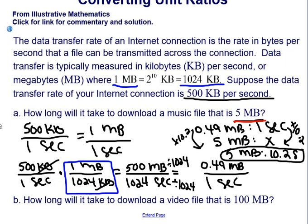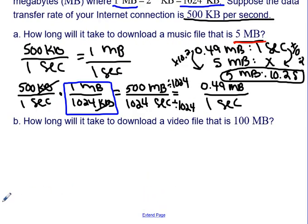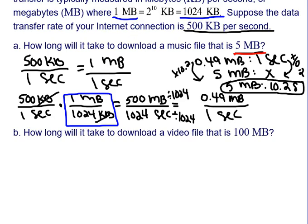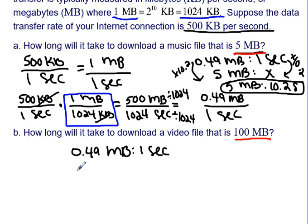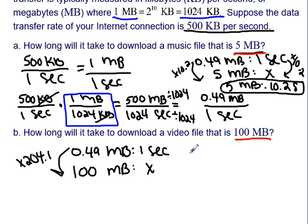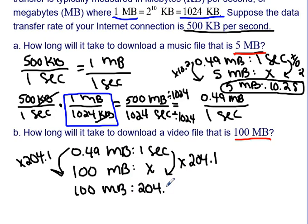Part B asks how long it will take to download a video file that is 100 megabytes, with the same internet connection from Part A. Our conversion factor told us the download speed was 0.49 megabytes per one second. For 100 megabytes, we need to find the unknown time. Since 100 divided by 0.49 is approximately 204.1, multiplying one second by 204.1 gives us 204.1 seconds to download 100 megabytes.